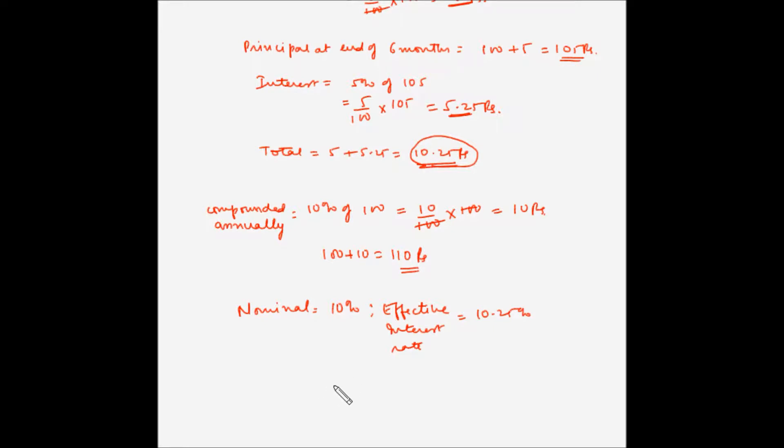So if we know the nominal interest rate and the number of compounding periods per year, then we can find out the effective interest rate by using the formula 1 plus i to the power n minus 1.